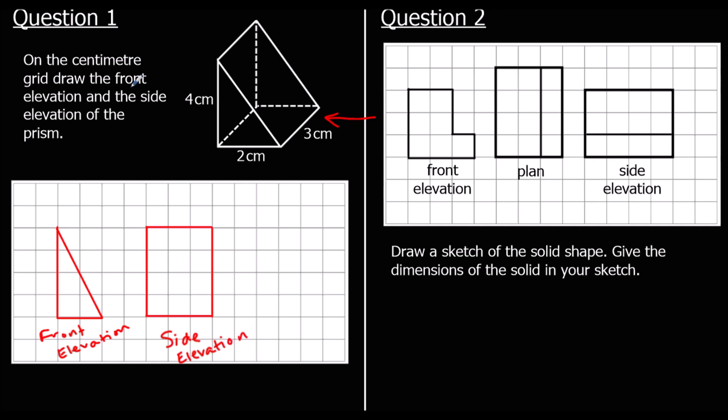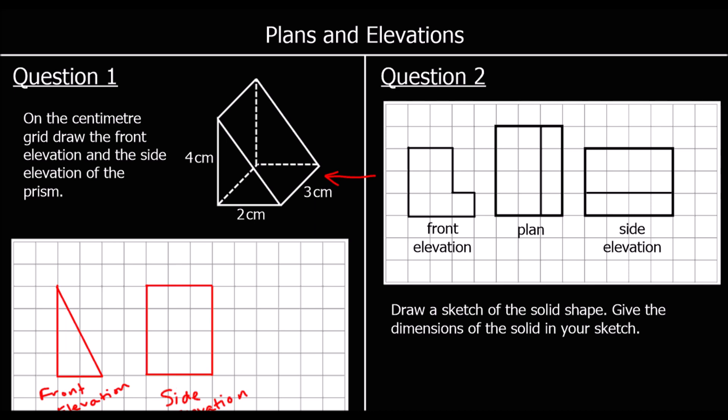We weren't asked to draw a plan, but if we did it would be 2 by 3 — the view from the top down. Question 2: we've been given the front elevation, the plan and the side elevation and we need to draw a sketch.